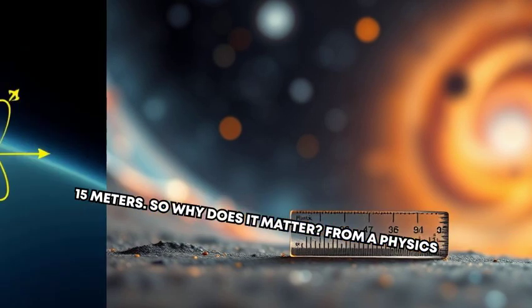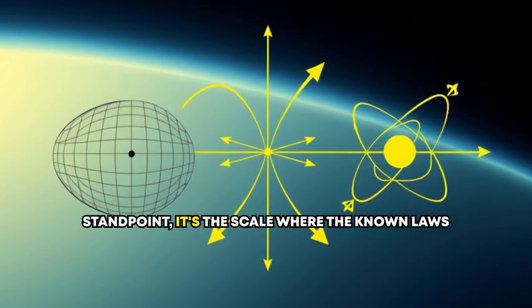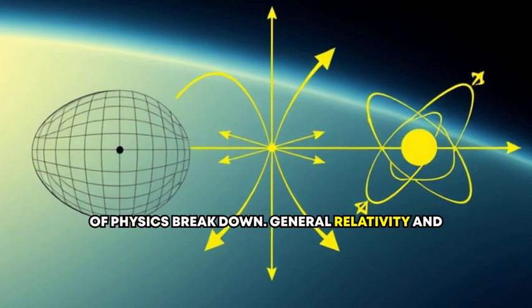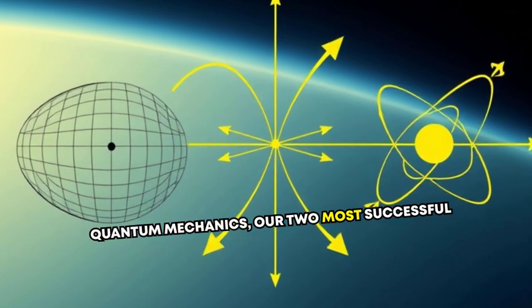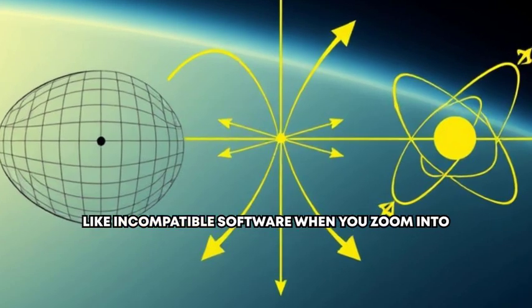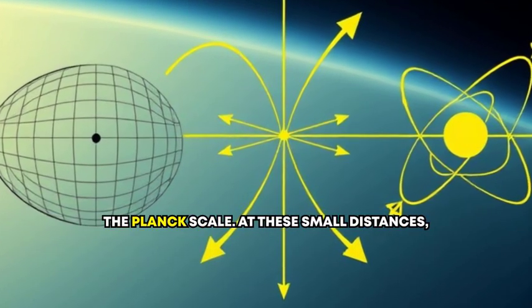So why does it matter? From a physics standpoint, it's the scale where the known laws of physics break down. General relativity and quantum mechanics, the two most successful frameworks for describing nature, collide like incompatible software when you zoom into the Planck scale.